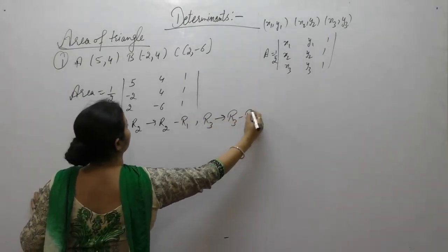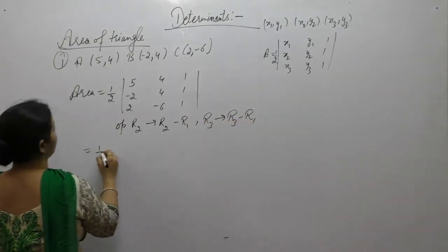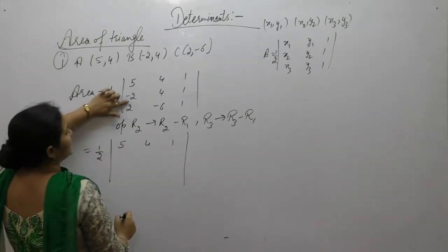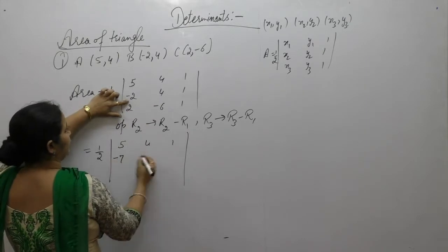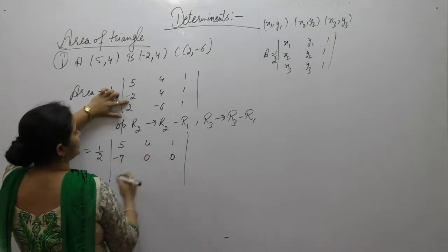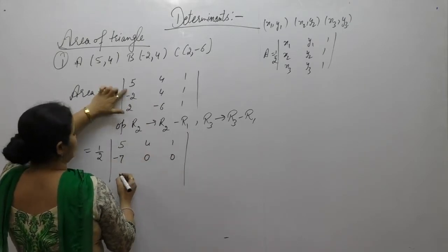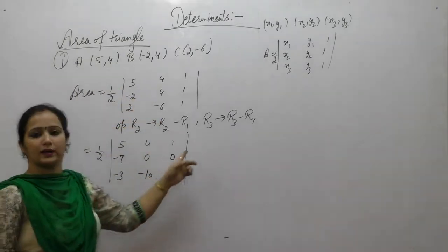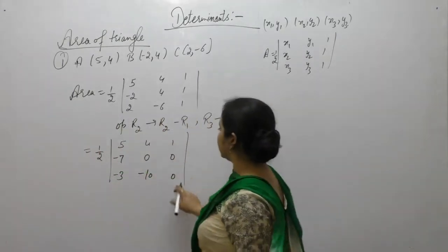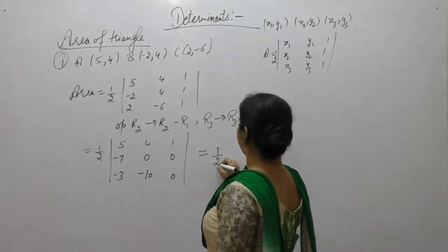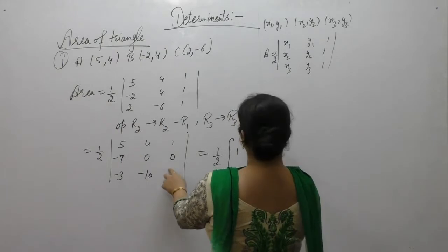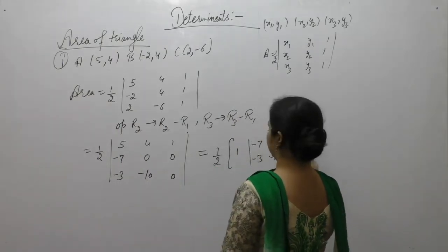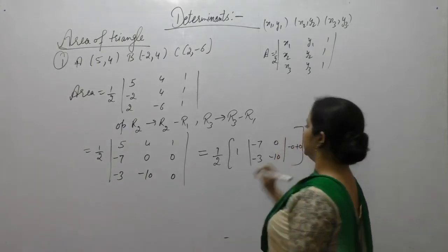R3 as R3 minus R1. So we get 1/2 times the determinant with first row (5, 4, 1), second row (-2-5, 4-4, 0) = (-7, 0, 0), and third row (2-5, -6-4, 0) = (-3, -10, 0). Expand it along the third column. All other terms are 0.